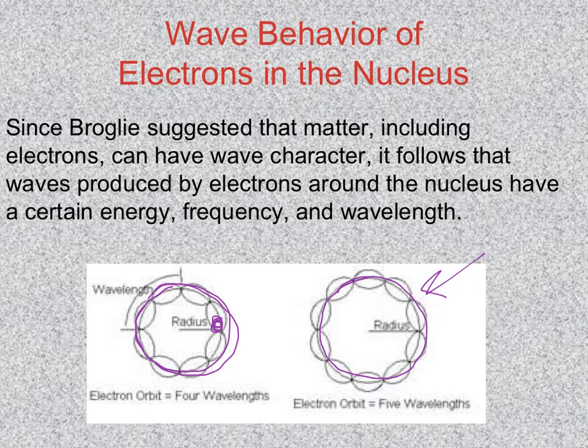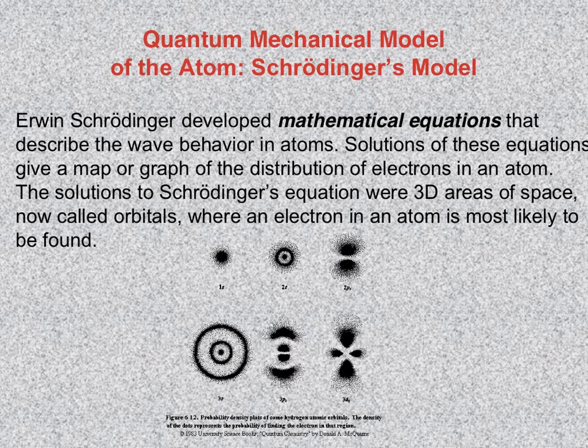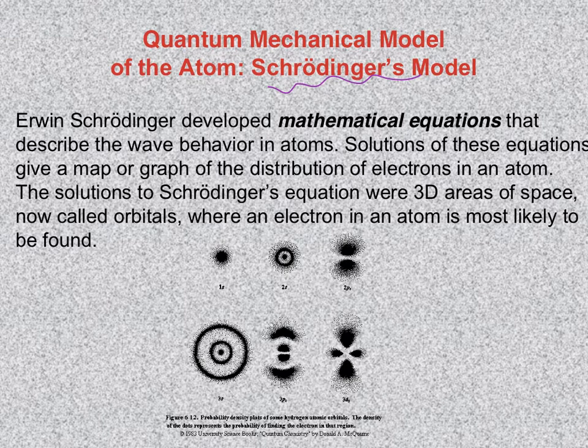So our next scientist, Schrödinger, did in fact that. He wrote out very complex, long mathematical equations to describe the wave behavior of electrons in an atom. He has these big mathematical equations - I actually used to put them on my PowerPoint; it would take up a whole page.